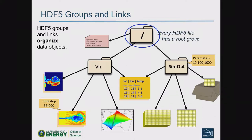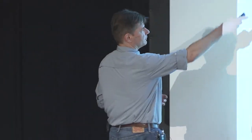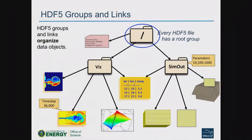Every HDF5 file starts at that root group. If you just create a file and datasets in it, they'll end up there by default. You have to explicitly create your own group structure. Links are basically part of the group hierarchy construction in HDF5. Each group contains a set of links — this Viz group has four links pointing to two different things; the root group has two links pointing at groups rather than dataset objects themselves. It builds out a lot like a file system.